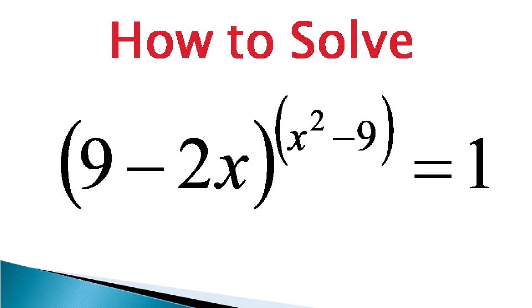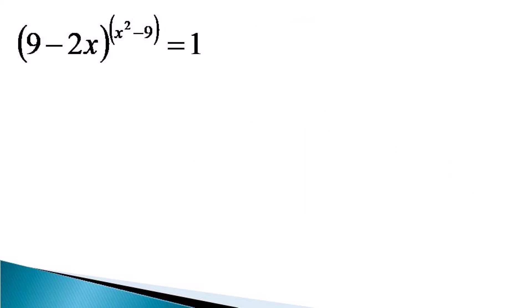Let us see how we solve and get various solutions of this equation. The first solution comes from the fact that an exponential expression can be equal to unity when the base of the exponent is unity. In this case, 9 minus 2x must be equal to 1.